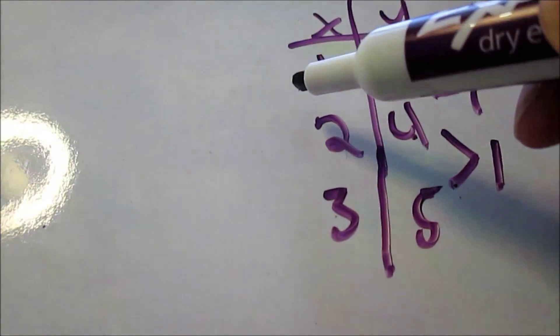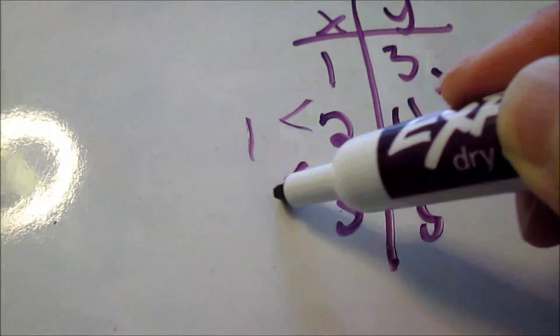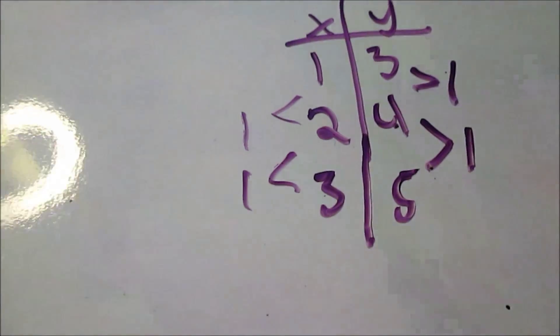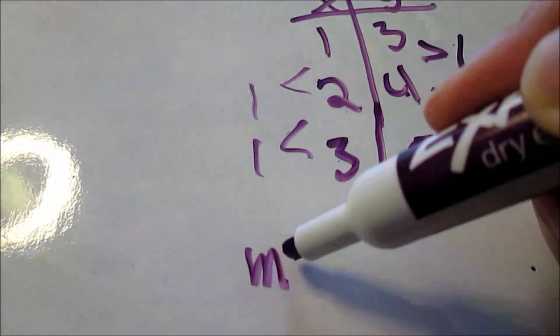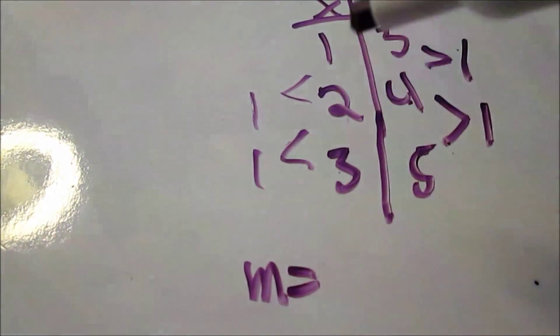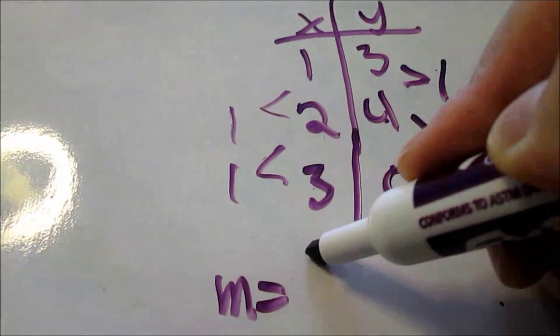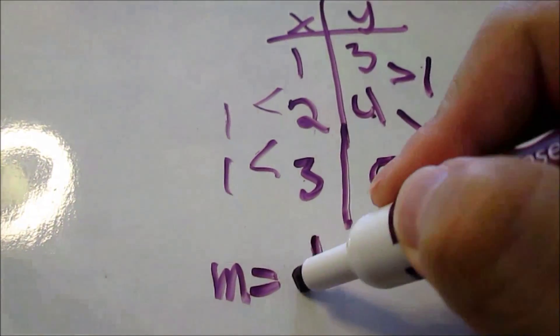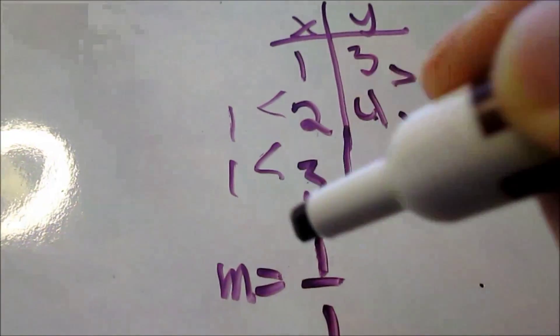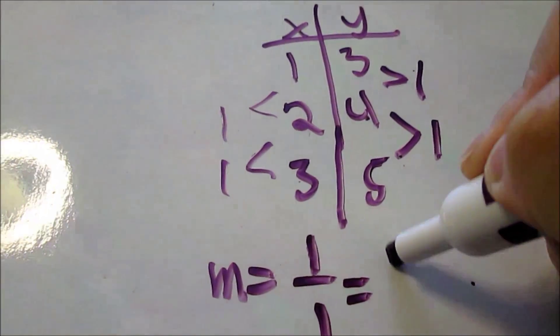Now, the change on the x side, plus one, plus one. So, when I write my rule, I start with the slope, or in other words, the rate of change. The change in the y side is one. Change in the x side is also one. And one divided by one is just one.